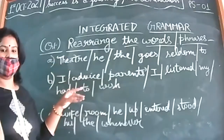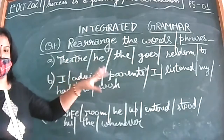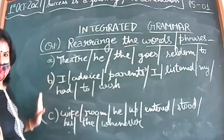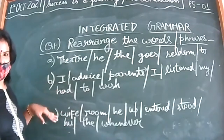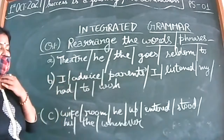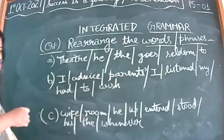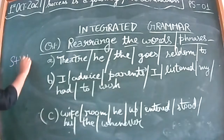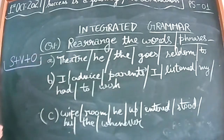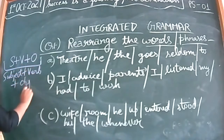Rearrange the words or phrases — it's one and the same thing. I have written three sentences here but they are not in correct order. Many children get confused how to rearrange, but there is a basic structure of English which is called S plus V plus O. S stands for subject, V stands for verb, O stands for object.